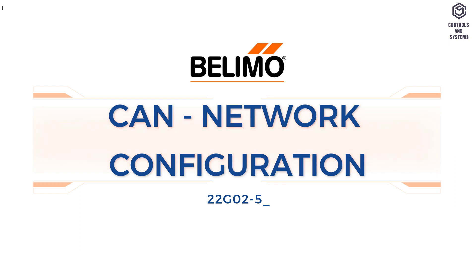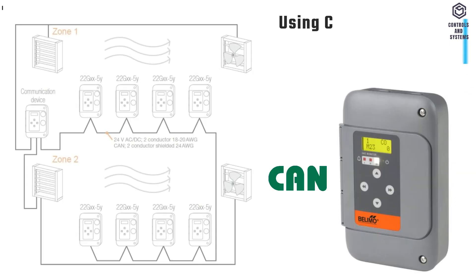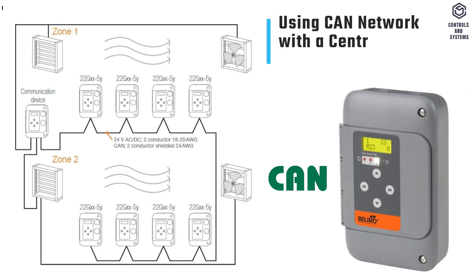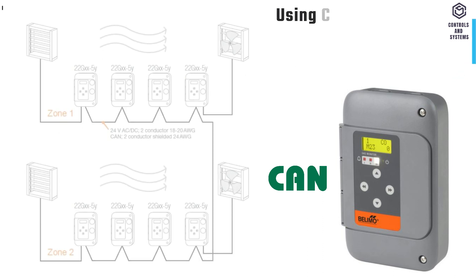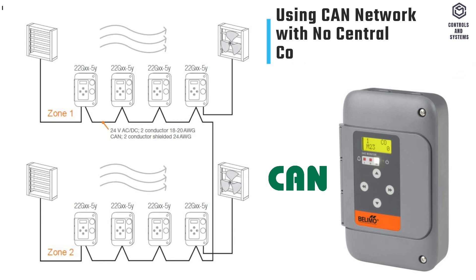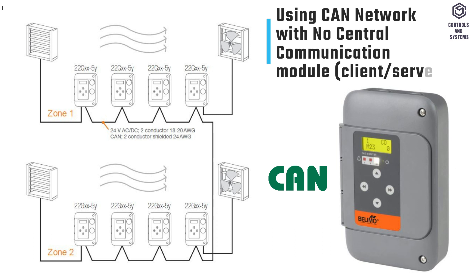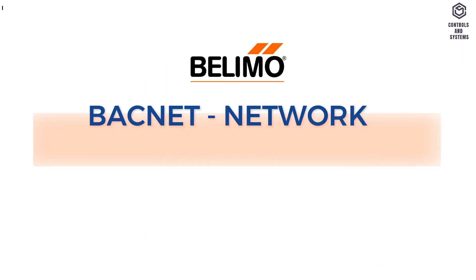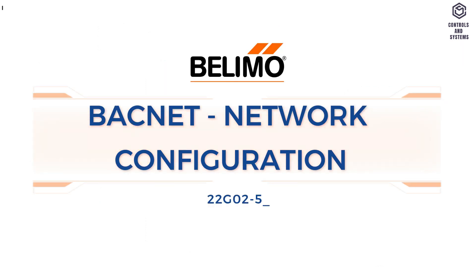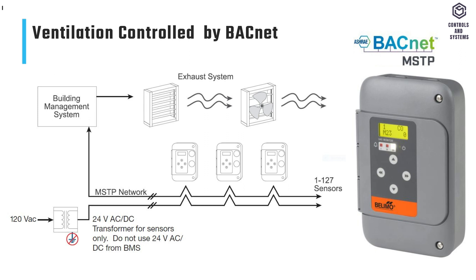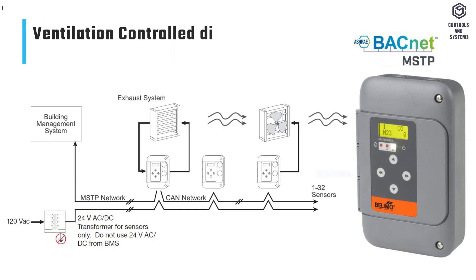CAN network configuration. This diagram represents the CAN network with a central communication module. This diagram represents the CAN network with no central communication module. BACnet network configuration. This diagram represents ventilation controlled by BACnet building automation. This diagram represents ventilation controlled directly by gas sensors.